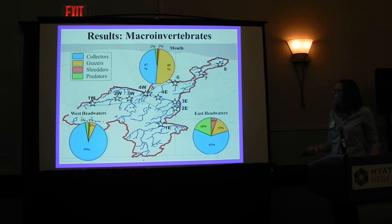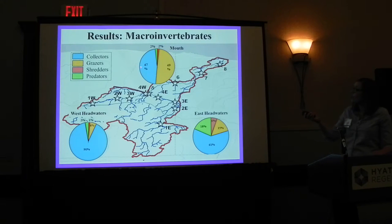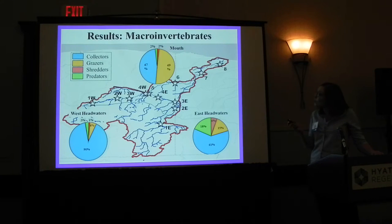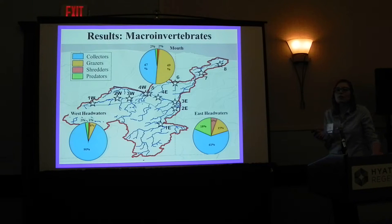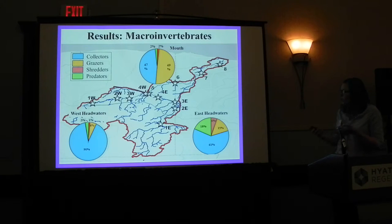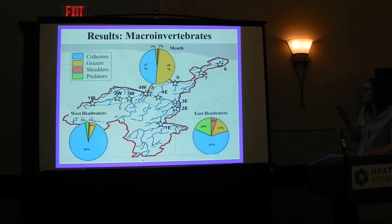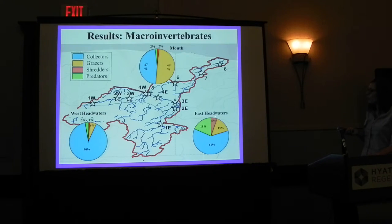A little bit about my macroinvertebrates. At the mouth of the river system, you expect to find a large amount of collector insects. But I found about 50% collectors and about 50% grazers, which is a lot more grazers than the river continuum would predict. In the headwaters, the east headwater site was much more diverse than the west. The west was mostly just collector insects — much higher than the river continuum predicts. The east headwater site showed a little more of what you would expect, with a shredder percentage, but it was very low.